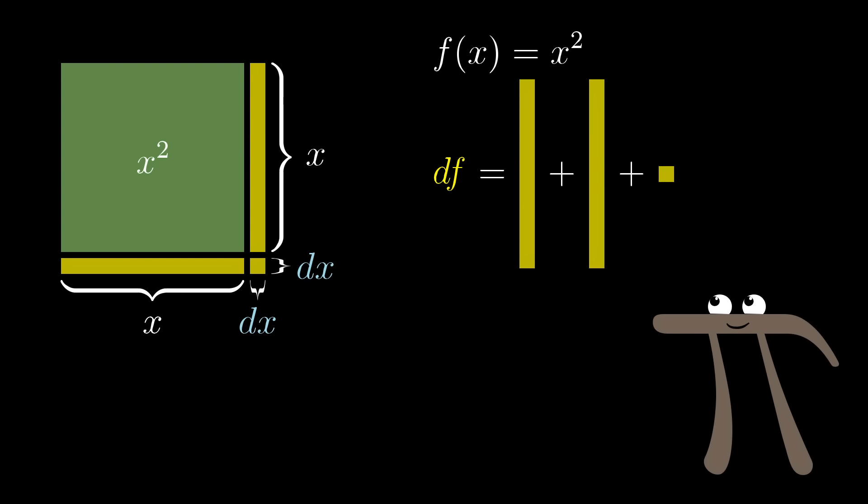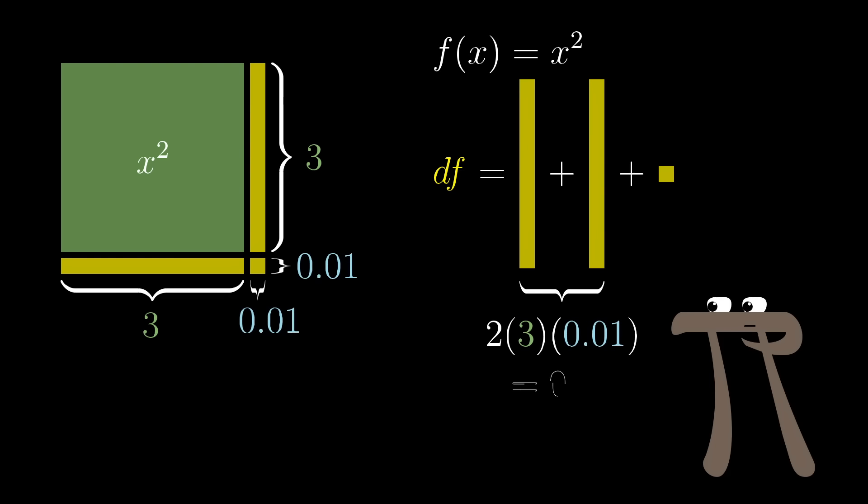That slight change in area is what df means in this context. It's the tiny increase to the value of f equals x squared, caused by increasing x by that tiny nudge dx. Now you can see that there's three new bits of area in this diagram, two thin rectangles and a minuscule square. The two thin rectangles each have side lengths of x and dx, so they account for 2 times x times dx units of new area. For example, let's say x was 3 and dx was 0.01, then that new area from these two thin rectangles would be 2 times 3 times 0.01, which is 0.06, about 6 times the size of dx.